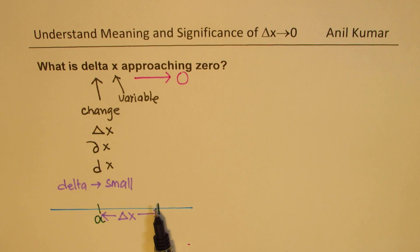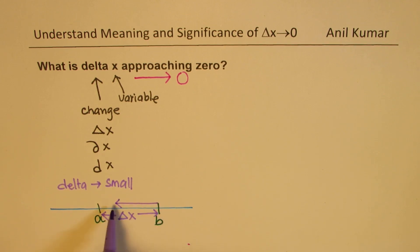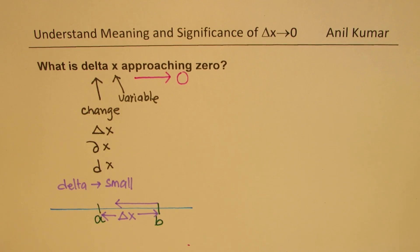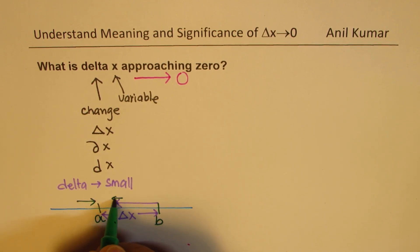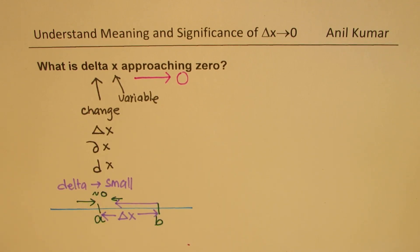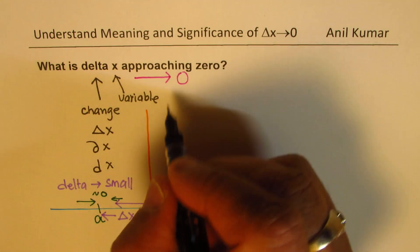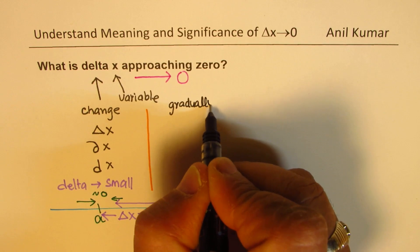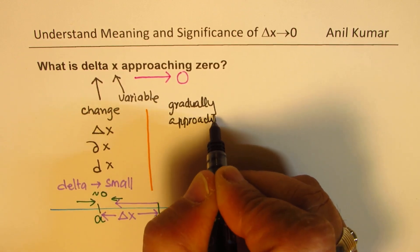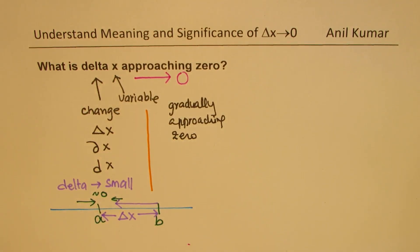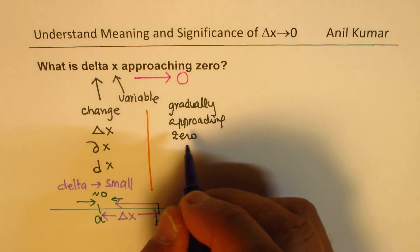So it gradually decreases to 0. You could visualize this as Delta X being made smaller and smaller, which means in the diagram that B is coming closer and closer to A, so that ultimately the distance between these two is almost 0 — approximately equal to 0. That is what approaching 0 means: this change is so small that it is gradually approaching 0. It is not 0 — remember, it is not 0. There is still a change, but not 0.